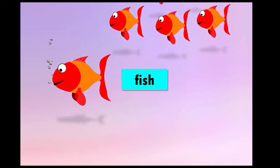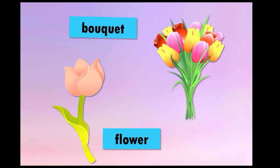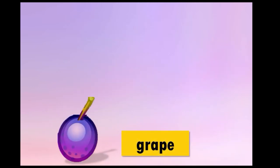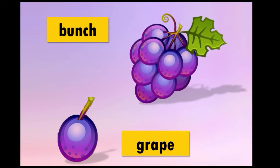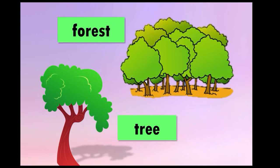Here we have a bear, and a lot of bears we can say a flock of bears. We have a fish — when there are a lot of them, we have a school of fish. A flower — when it is just one, we say a flower, but when we have a group of flowers, we have a bouquet. A grape, individual or singular, just a grape. But when we have more of them, we have a bunch of grapes. We can also say a bunch of bananas, a bunch of keys. And we have a tree — when we talk about a lot of trees, we can say a forest.